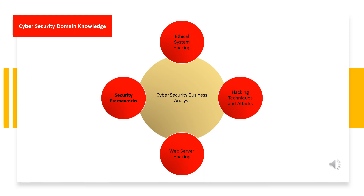Cyber security business analysts must be adept and knowledgeable in the following areas. One: ethical system hacking — this will come in useful when building agile user stories. Two: hacking techniques and attack — this will come in useful when discussing weaknesses and vulnerabilities within current systems. Three: web server hacking — this will come in useful when discussing attacking methods and different techniques used by malicious hackers to attack web servers.